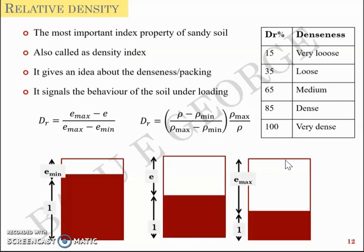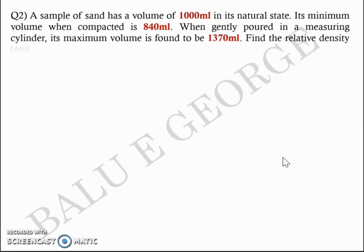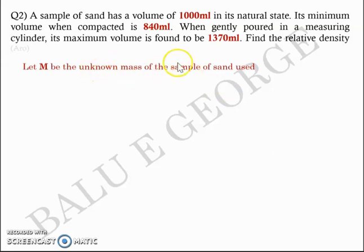We had also discussed relative density in the previous video and tried to solve a few simple numerical problems. Problem one: a sample of sand has a volume of 1000 milliliters in its natural state. Its minimum volume when compacted is 840 milliliters, and when gently poured in a measuring cylinder its maximum volume is found to be 1370 milliliters. We are asked to find the relative density. All we are given is the volume, so let's assume M is the unknown mass of the sand sample. M is occupied in three different forms: 1000 mL, 840 mL, and 1370 mL.